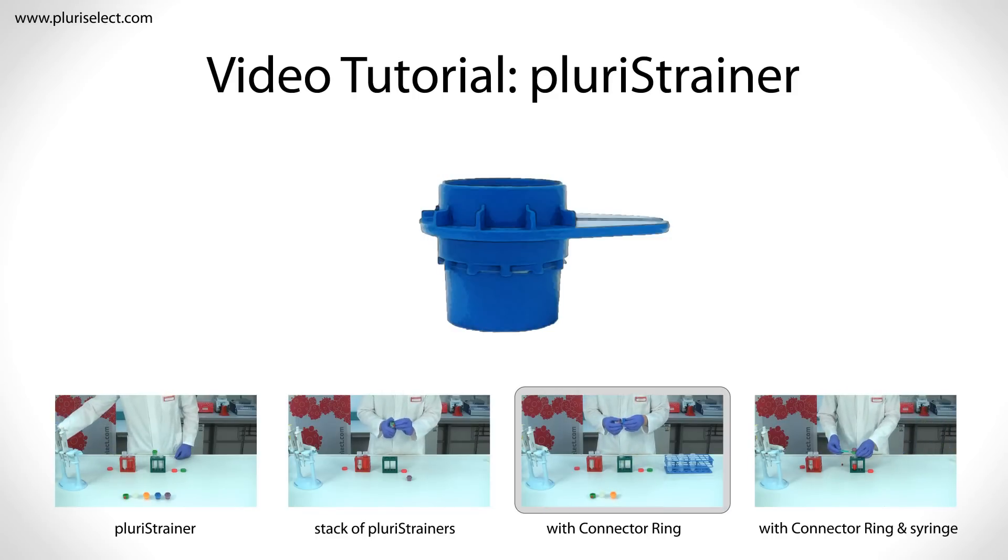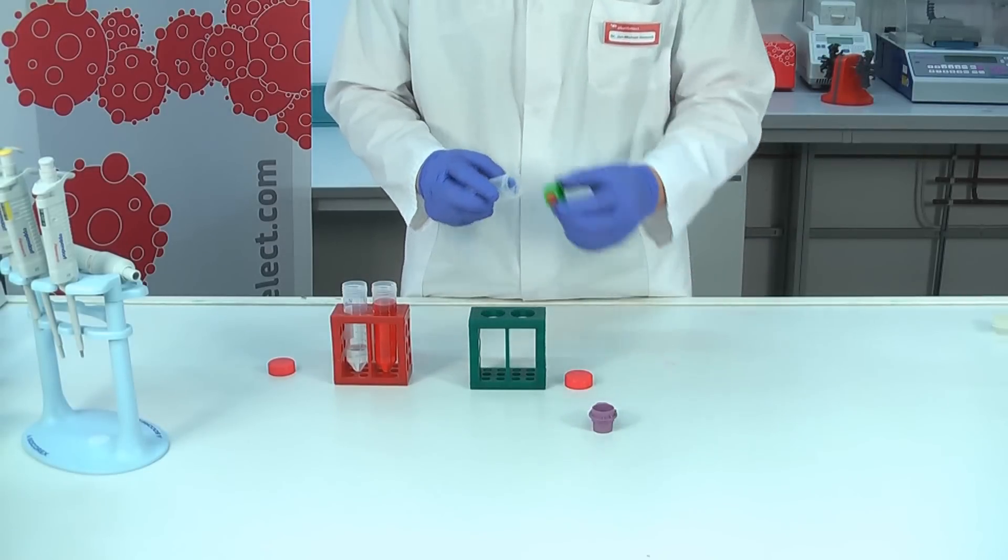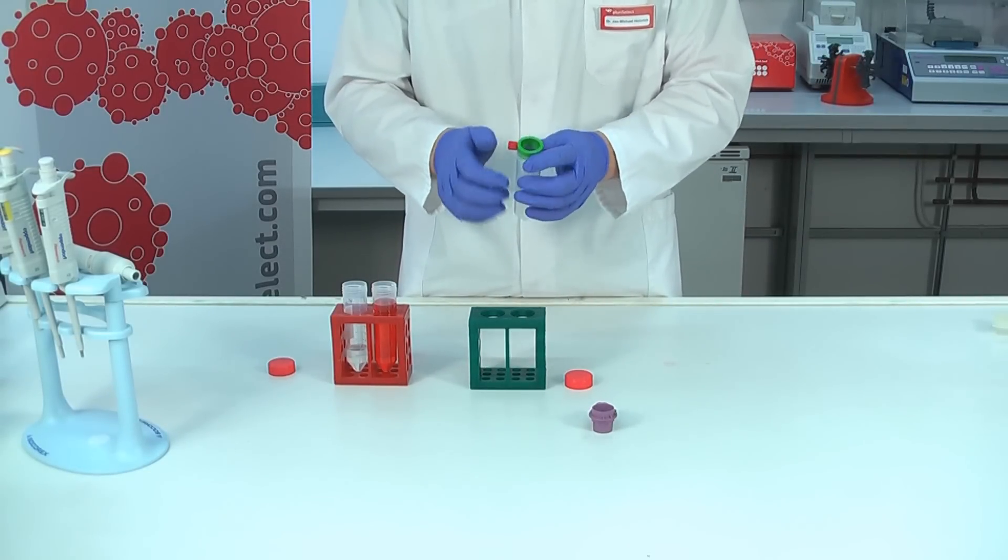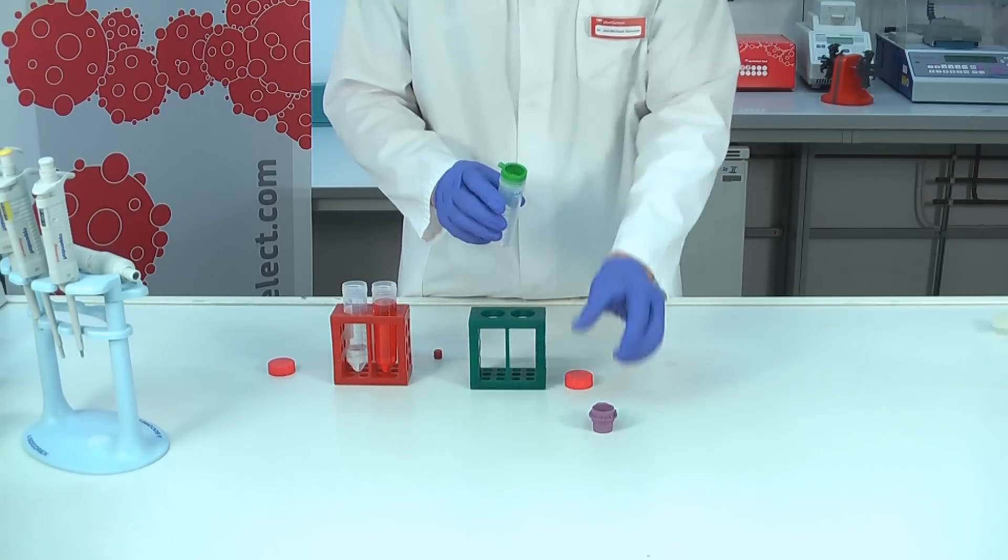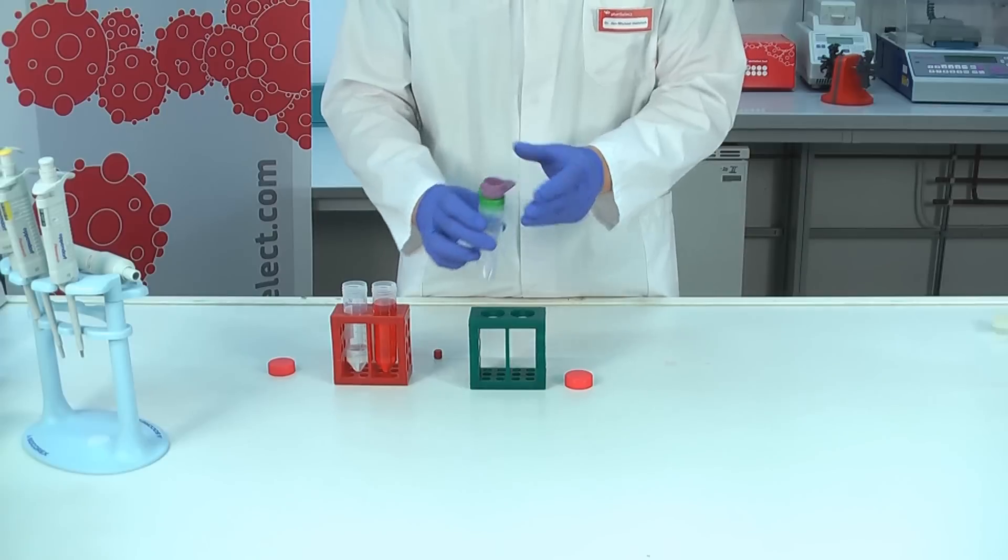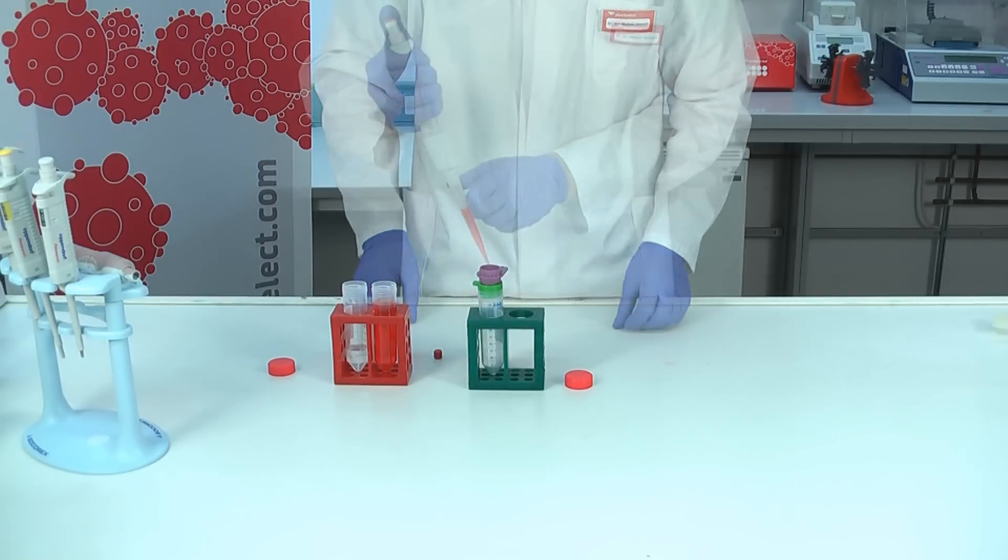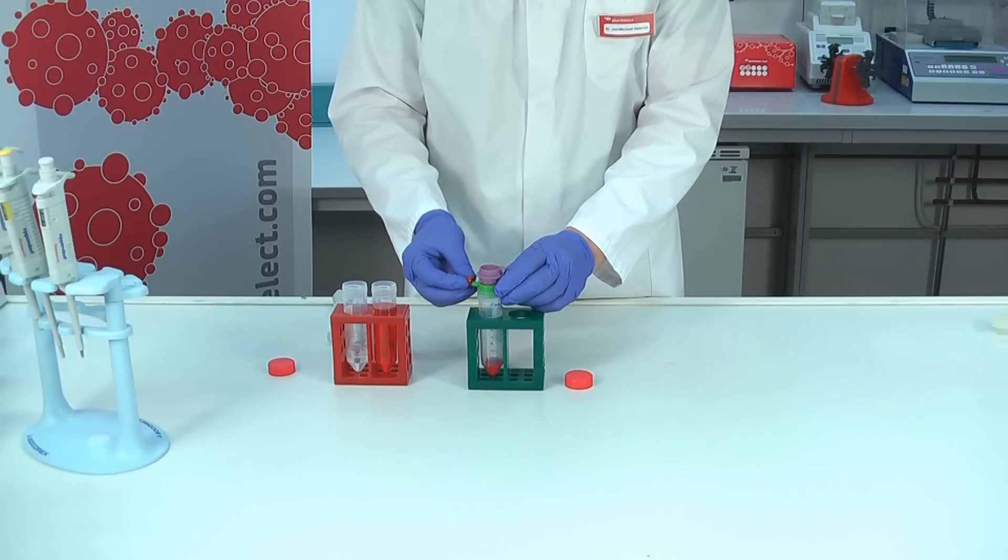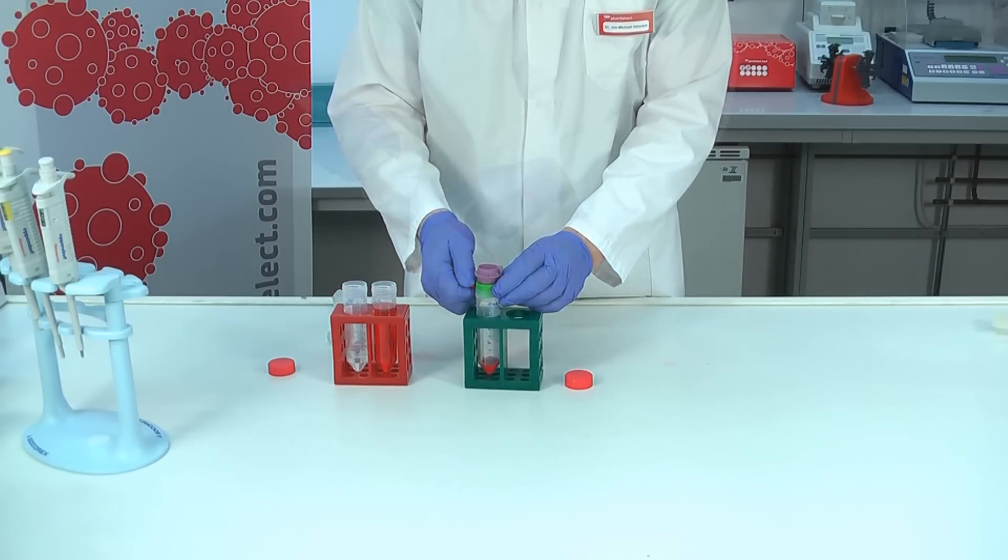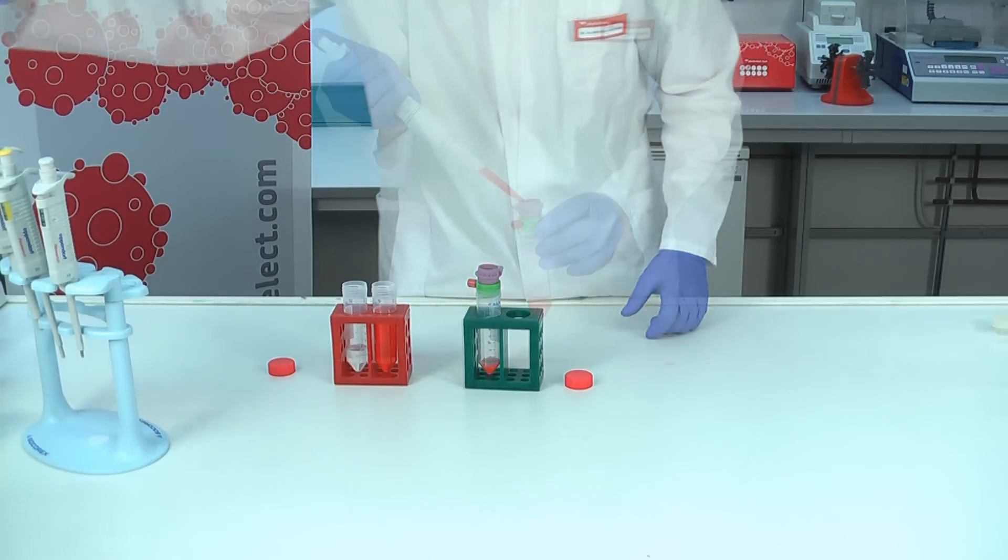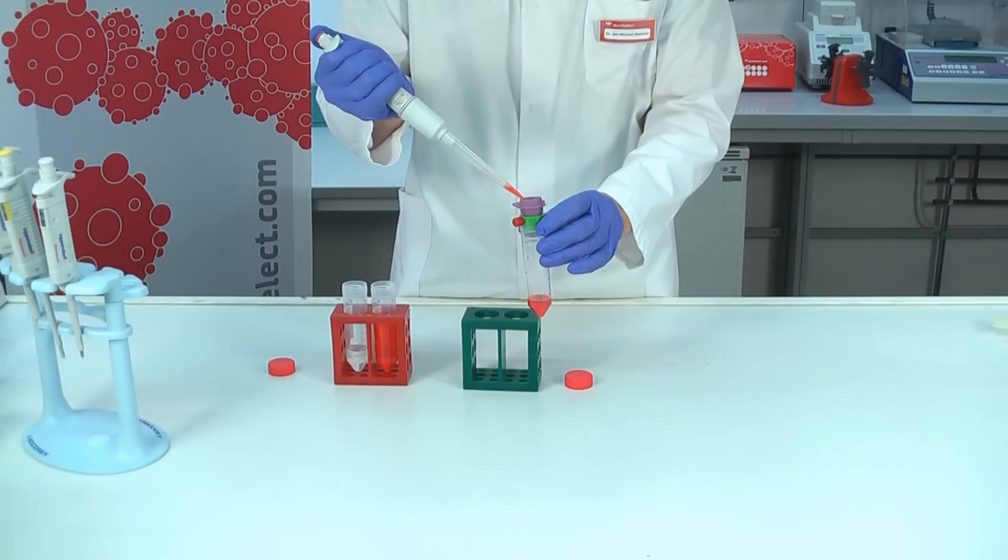Another special feature of pluriStrainer is that you can combine it with a connector ring to control the rate of flow. First put the connector ring on a 50ml tube and make sure it fits tightly. Then add the pluriStrainer on top. When the dew lock is open, your sample material will run through as shown before. Now close the dew lock and your sample material will stay on the strainer. This way you can work on it, for example to lyse cells directly on the strainer.